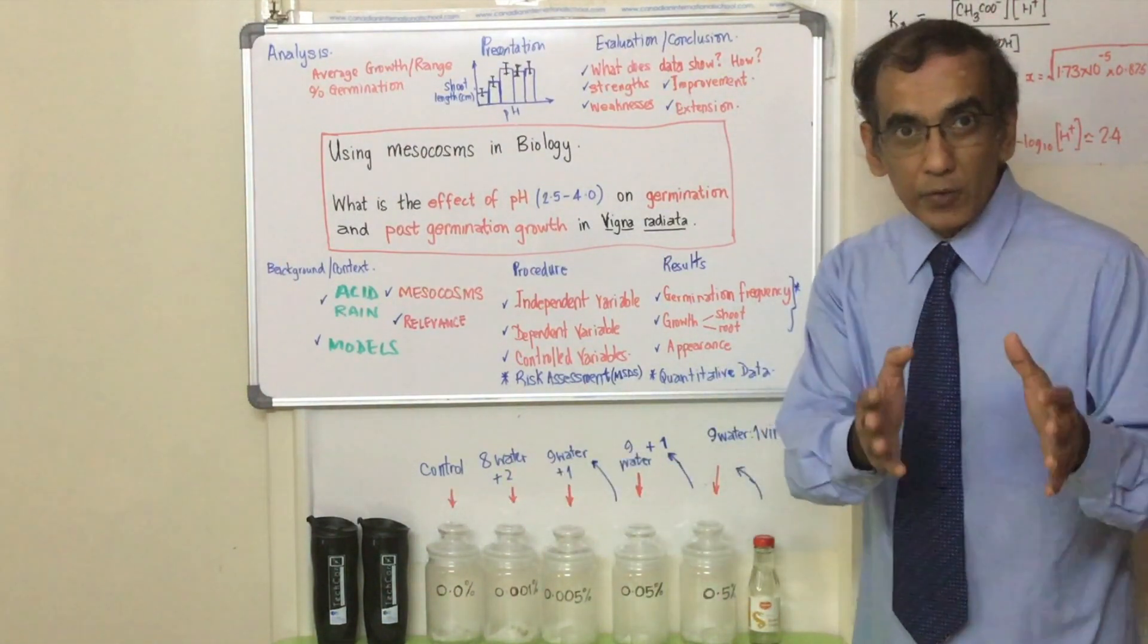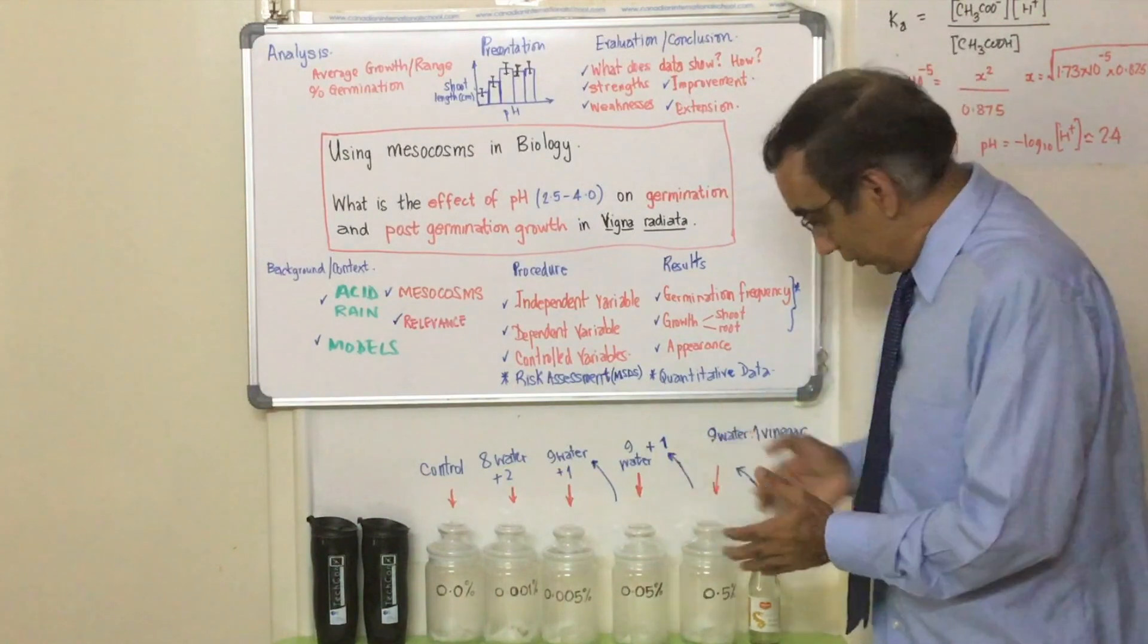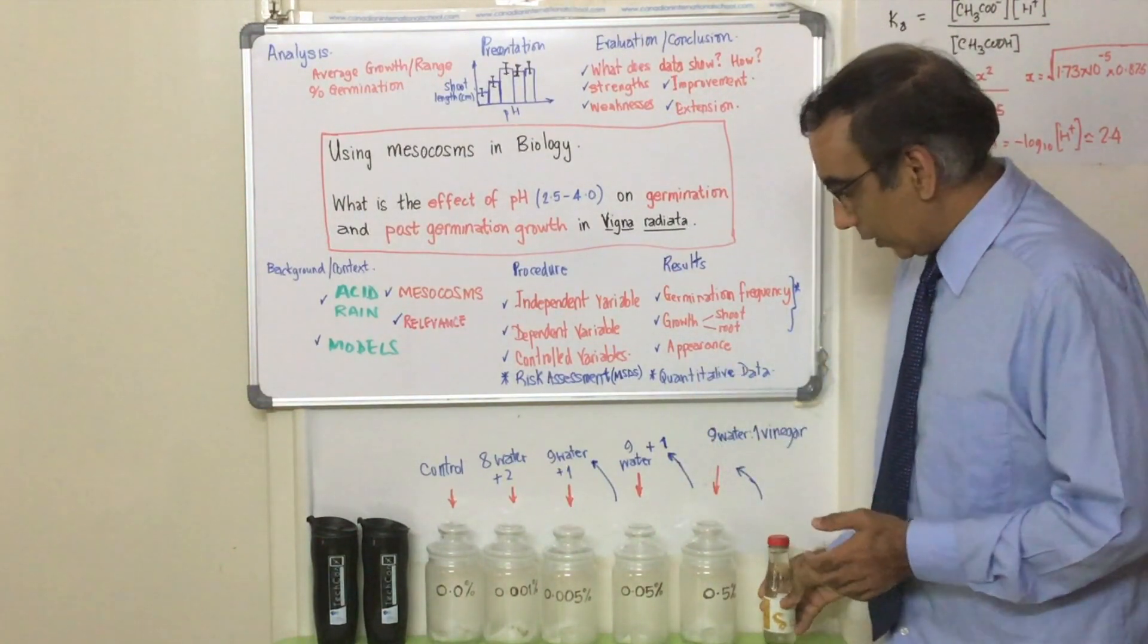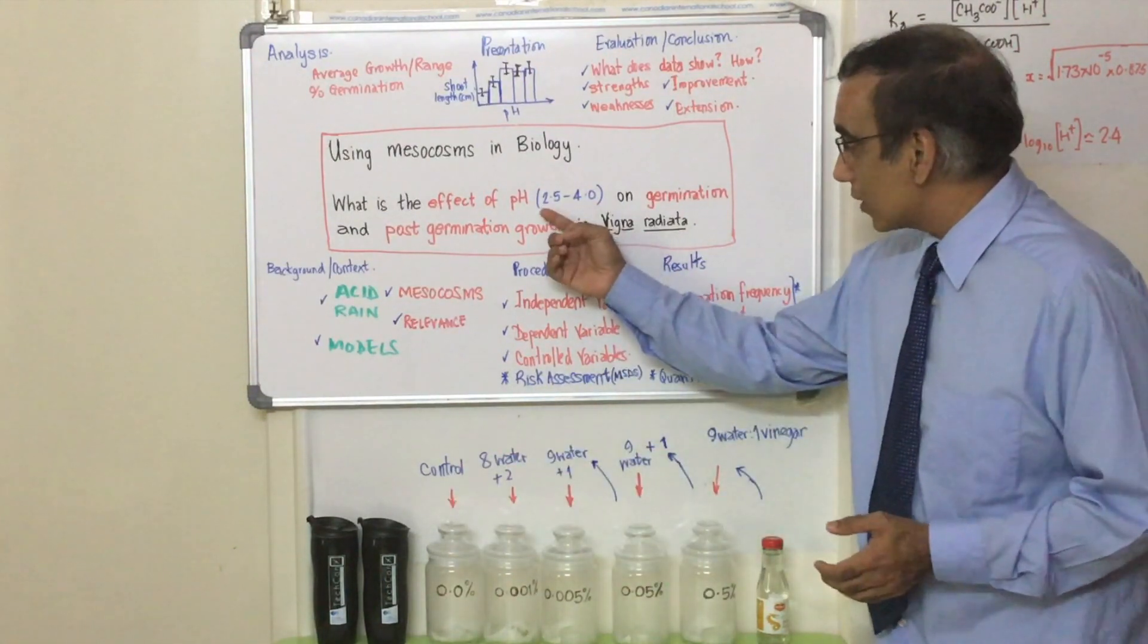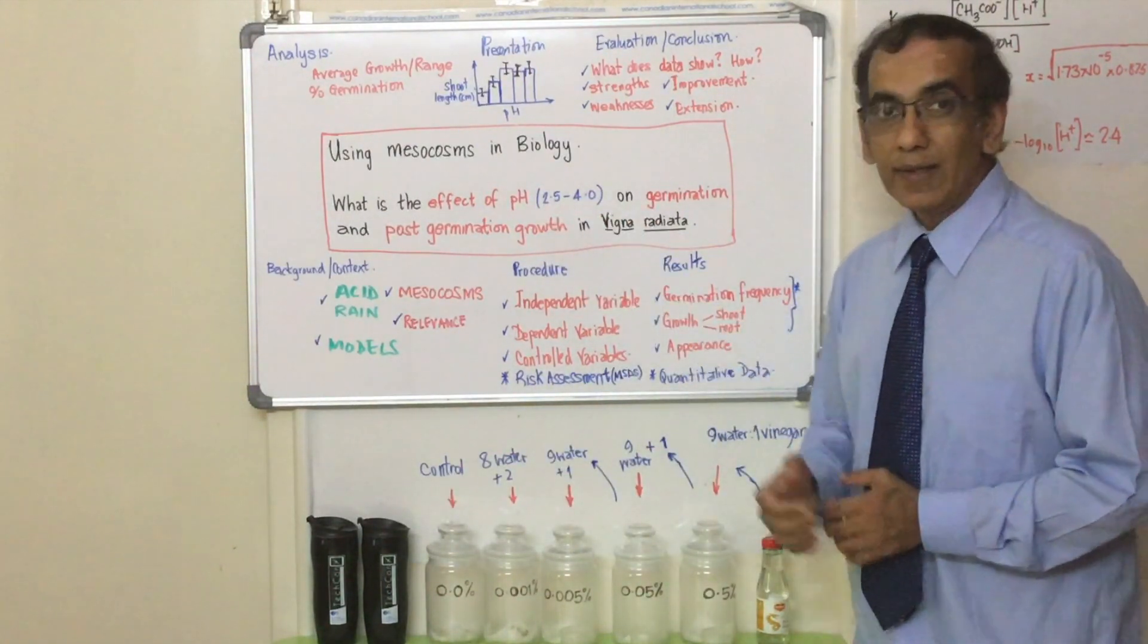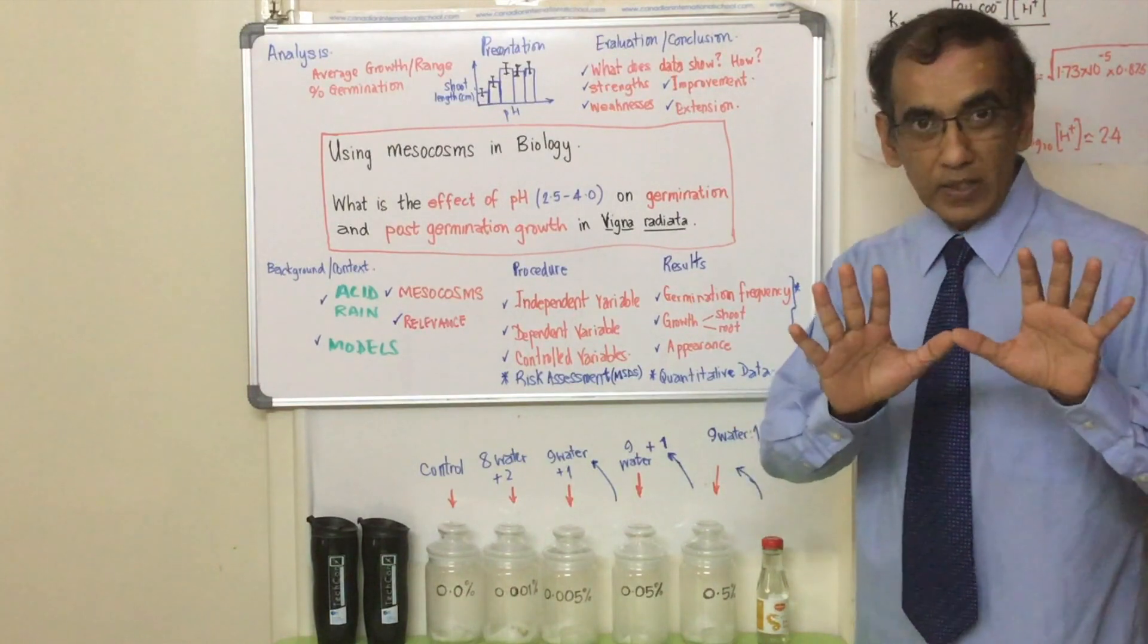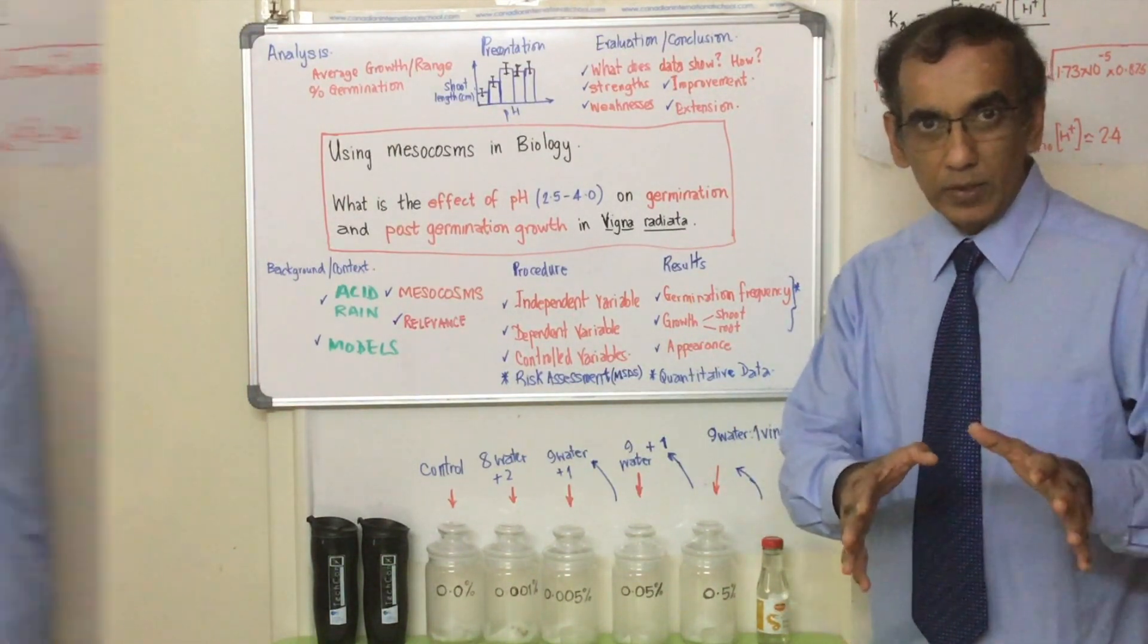Of course there's some chemistry that goes into diluting our five percent vinegar so that we could get a range of dilutions that really run across 2.5 to 4.0. That will be explained in a separate video that will be done by IB chemistry students.